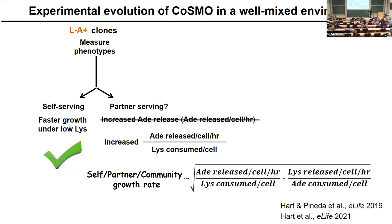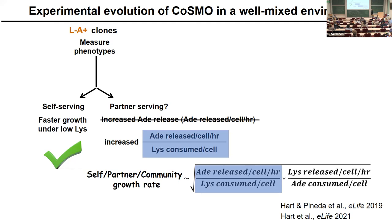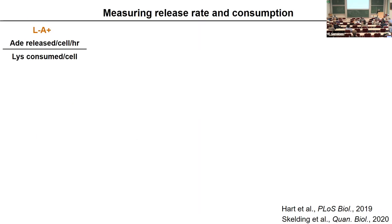It turns out that self-growth rate equals partner growth rate equals community growth rate equals the square root of this normalized release rate. If you're partner-serving, you're not only increasing your partner's growth rate but the entire community's growth rate — including your own. Notably, the affinity for lysine doesn't appear in this formula, because if your rate-limiting step is how fast the partner is giving you metabolites, your affinity for the metabolite doesn't matter for how fast the entire community grows.